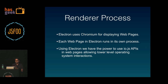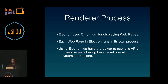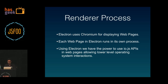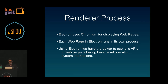Just loading the main process is not going to load the application — you need to load some sort of a web page, some sort of a view. So the renderer process is the one that's going to load your HTML files into your desktop application. Using Electron, you get the power of using IO.js APIs, which allows you to interact with your lower-level OS APIs.